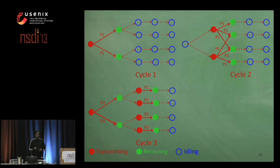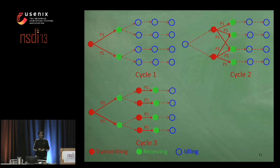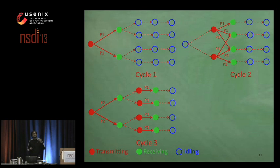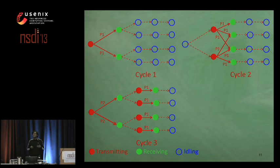In the third cycle, there are parallel transmissions of two different packets. The root node is transmitting its second packet while the first packet is being forwarded further down the tree. As they are two different packets, they cannot interfere constructively — they collide, resulting in packet corruption.